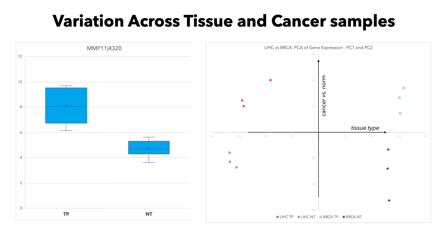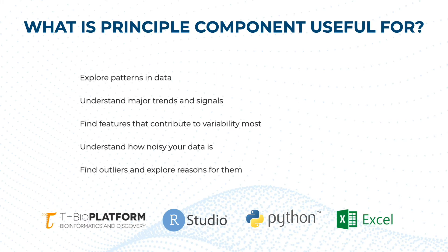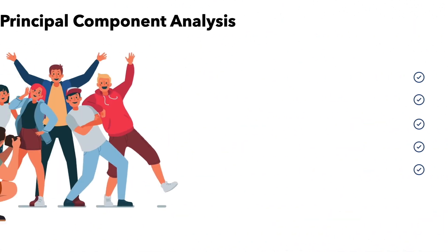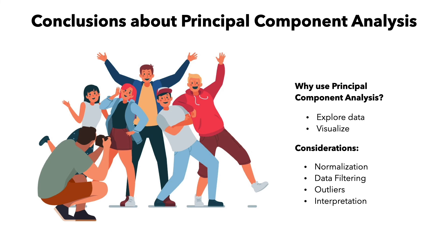So our conclusion is that tissue type has a much greater influence on gene expression patterns overall than the difference between tumor and normal samples. PCA for exploratory analysis can be useful to explore patterns in data, understand major trends, find features that contribute to variability, understand noisiness of data, and find outliers that need further investigation. We can liken PCA to a photographer trying to find the best angle for a picture that captures as much detail as possible while showing us the most information about the group as a whole. When using this multivariate analysis method, it is important to play around with normalization and filtering while paying attention to outliers for the best possible interpretation.